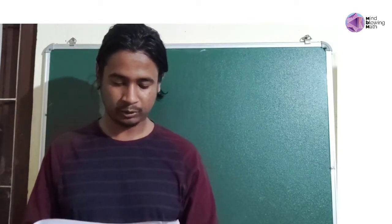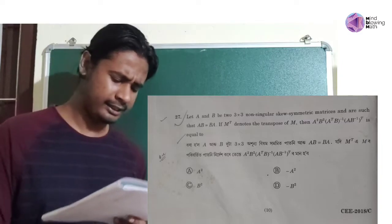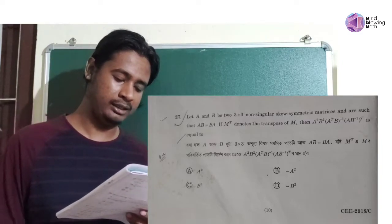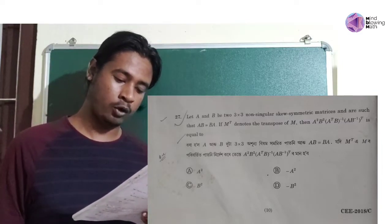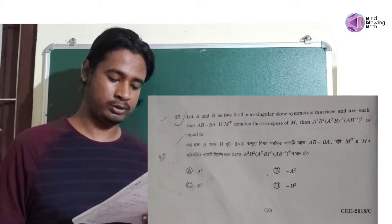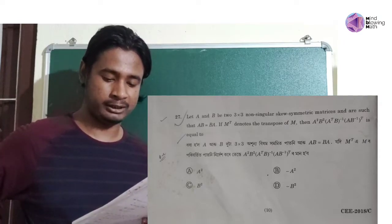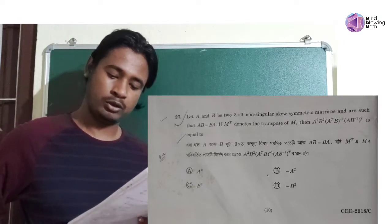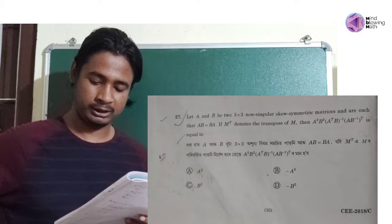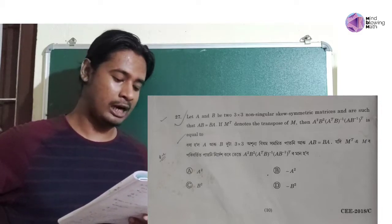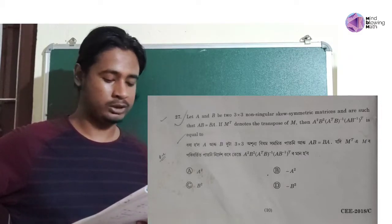So, first question number 27. Let A and B be two 3×3 non-singular matrices — my determinant is non-zero — skew symmetric matrices. I am going to recall what is a skew symmetric matrix. R is such that AB is equal to B.